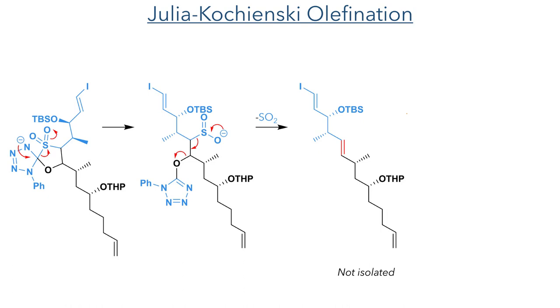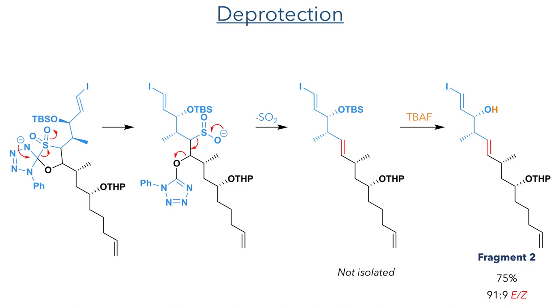This product was not isolated, and was instead directly deprotected using TBAF to remove the TBS group. This formed Fragment 2 in a 75% yield with a 91:9 E/Z ratio.